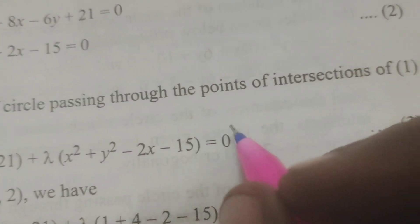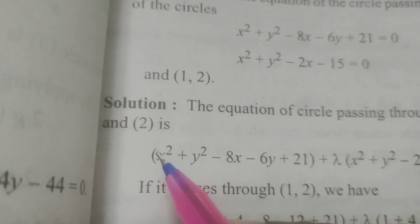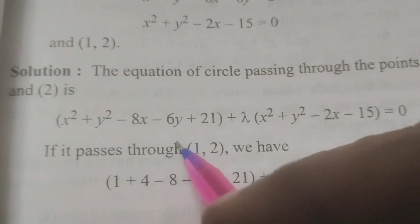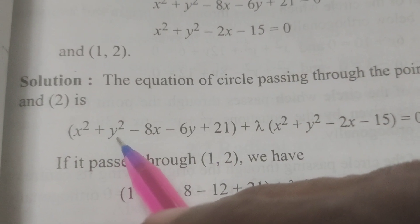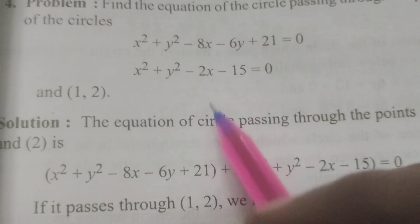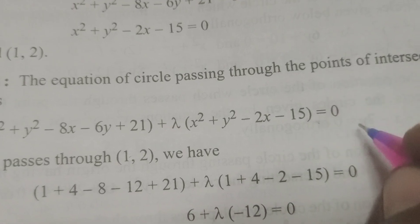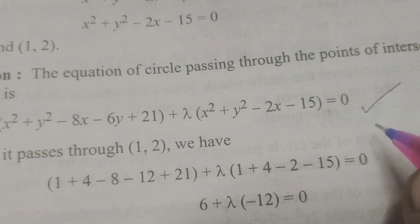The equation of a circle passing through the intersection points of two circles is given by the formula S + λS₁ = 0. So, the first circle equation plus λ times the second circle equation equals zero.